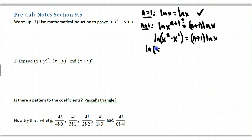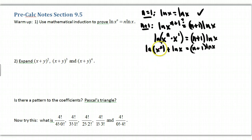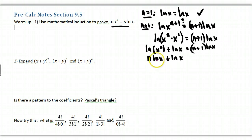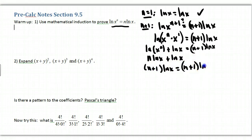I can rewrite x^n · x as a product, and the log of a product equals the sum of the logs. Now I can apply the induction hypothesis — ln(x^n) = n·ln(x) — because this term deals with n, not n+1. Plugging that in, I have n·ln(x) + ln(x). Factoring out ln(x), I'm left with (n+1)·ln(x). That completes the induction proof.